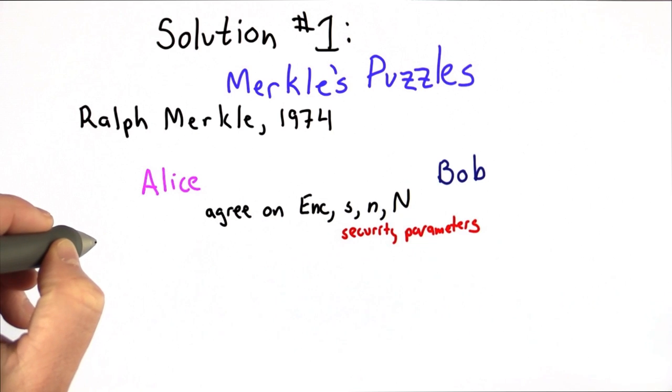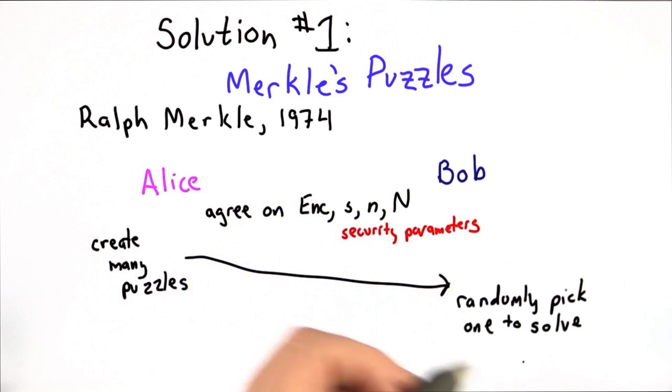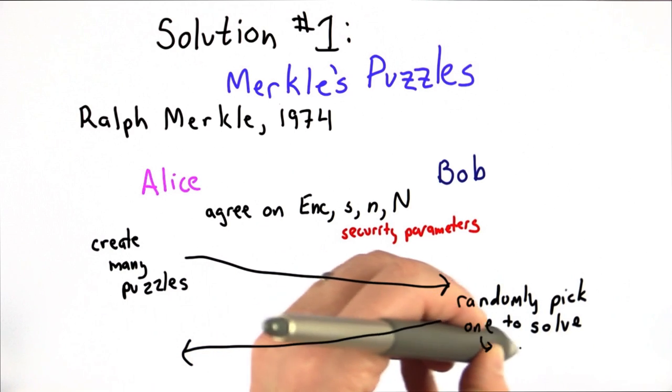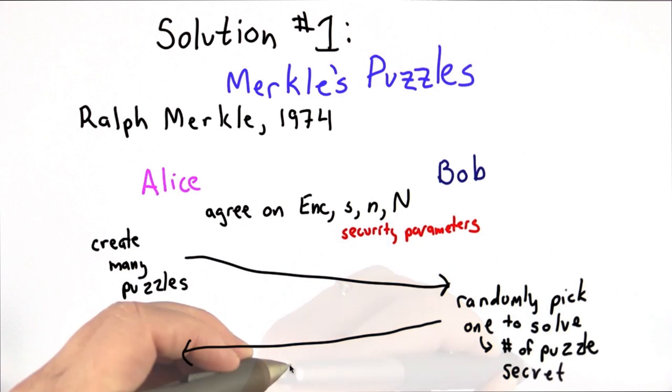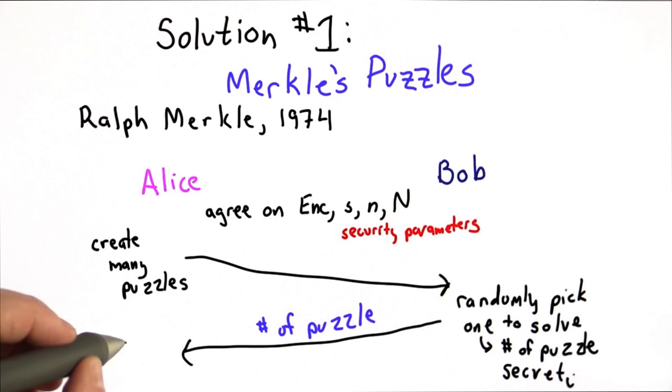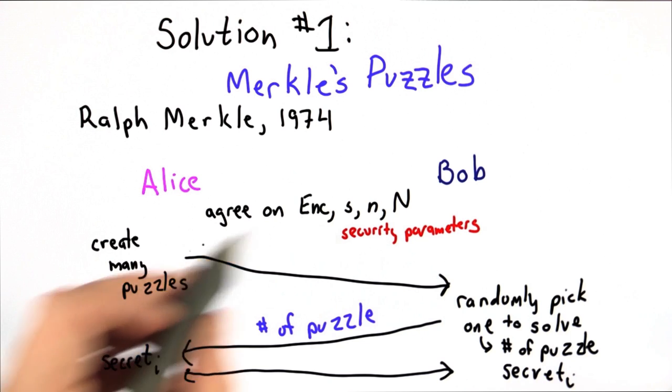The basic idea is Alice is going to create many puzzles and send them to Bob. Bob will randomly pick one of the puzzles to solve, and part of solving that puzzle will give Bob the number of the puzzle and a secret. What he'll send back to Alice is the number of the puzzle, and Alice will know the corresponding secret, and they'll use that as the key. Let me go through this in a little more detail, but that's the high-level idea.